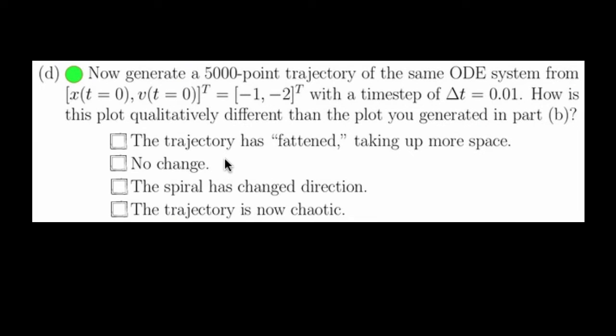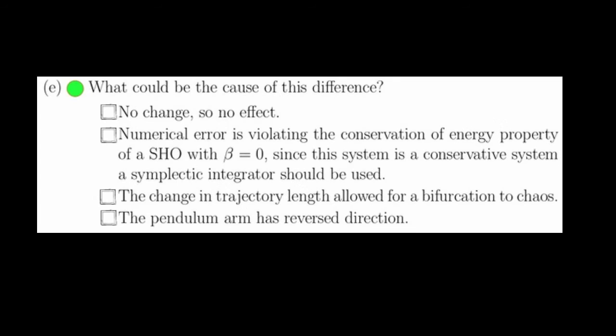So the answer to question D is that the trajectory fattened, taking up more space, and the answer to question E was that the numerical error is violating the conservation of energy property of a simple harmonic oscillator with beta equals zero. Since the system is a conservative system, a symplectic integrator should have been used.